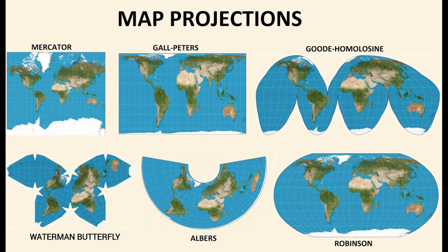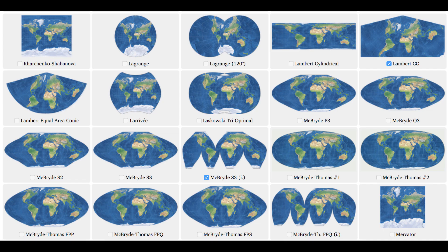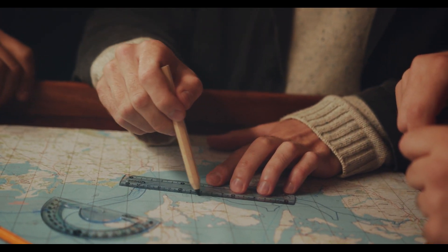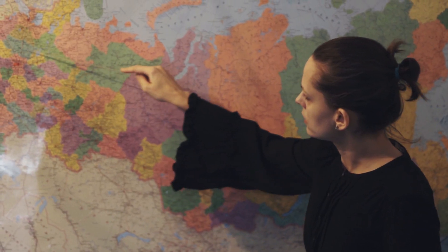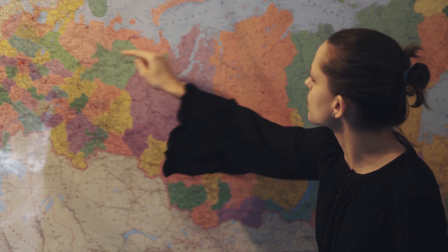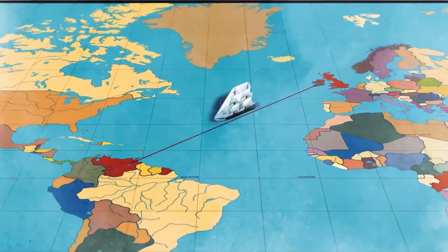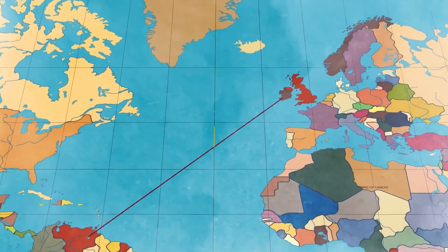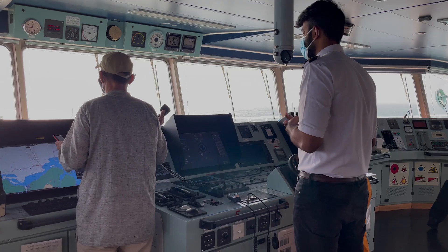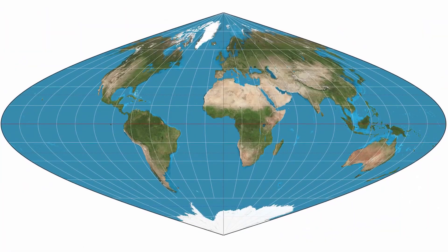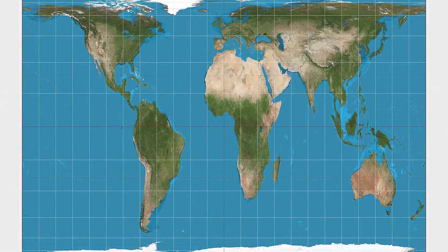Theoretically, you could project Earth onto countless shapes to create different map projections. But every projection will distort Earth's surface in some way. Depending on the purpose, some distortions are acceptable while others aren't. For instance, the Mercator projection sacrifices accurate relative size to preserve angles and directions — essential for navigation. Meanwhile, area-preserving maps sacrifice angles and shapes.